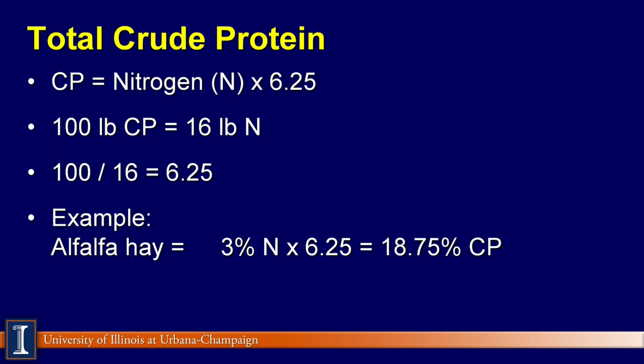When you buy protein supplements or have homegrown feed analyzed for protein, the feed tag or the laboratory that conducts the analysis reports the protein content of the feed as crude protein. To determine the total crude protein in a feed, the feed is analyzed for nitrogen and the nitrogen content is multiplied by 6.25.